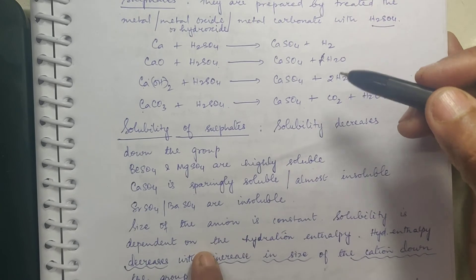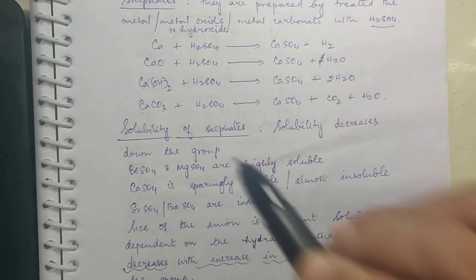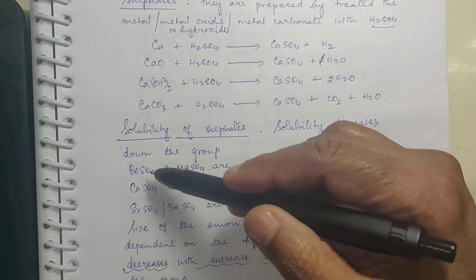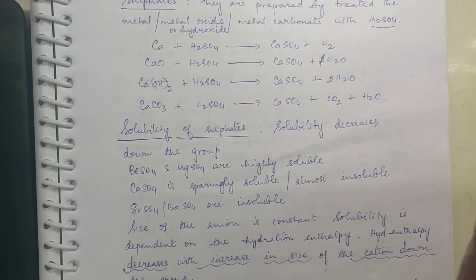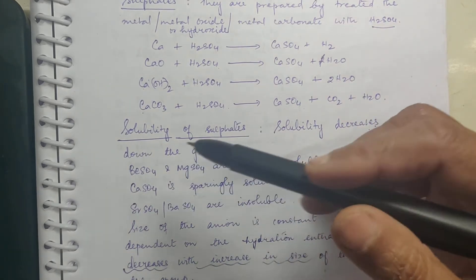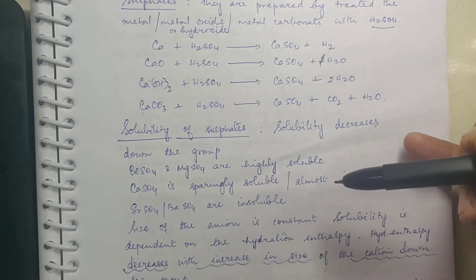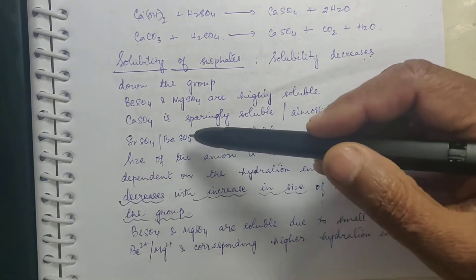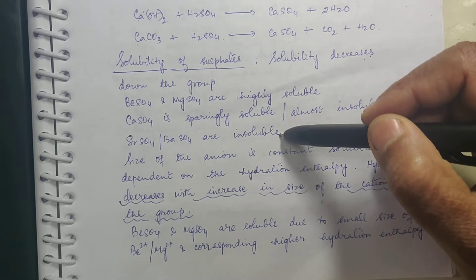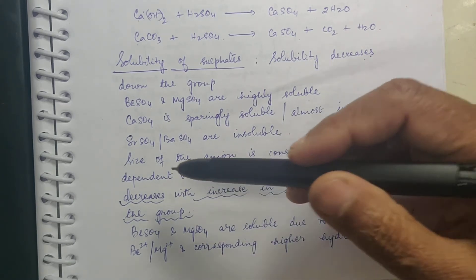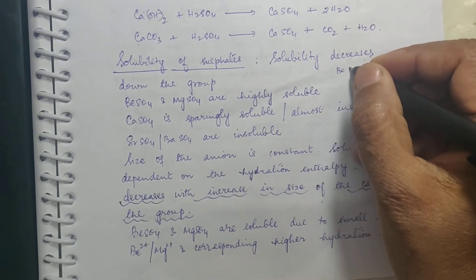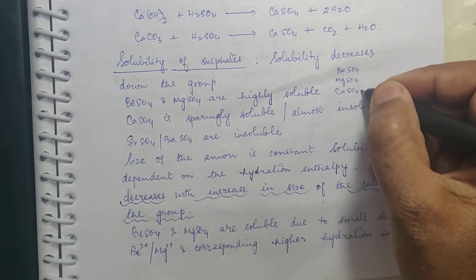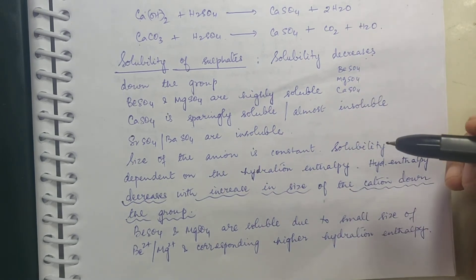The solubility of sulfates decreases down the group. BeSO4 and MgSO4 are highly soluble. CaSO4 is sparingly soluble — almost insoluble, its solubility is very low. SrSO4 and BaSO4 are totally insoluble. Now, the sulfate radical size is constant throughout; what is increasing is the metal ion size.